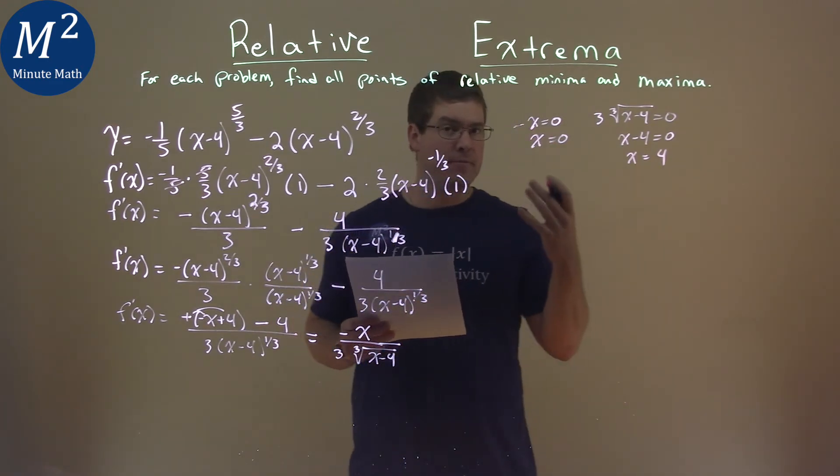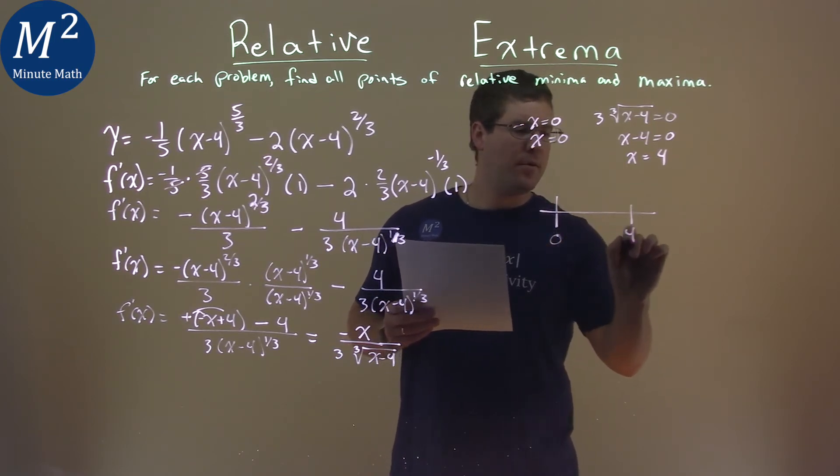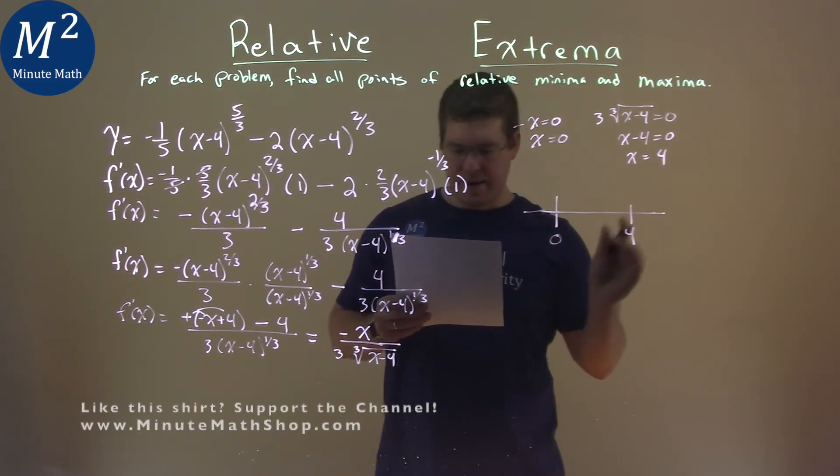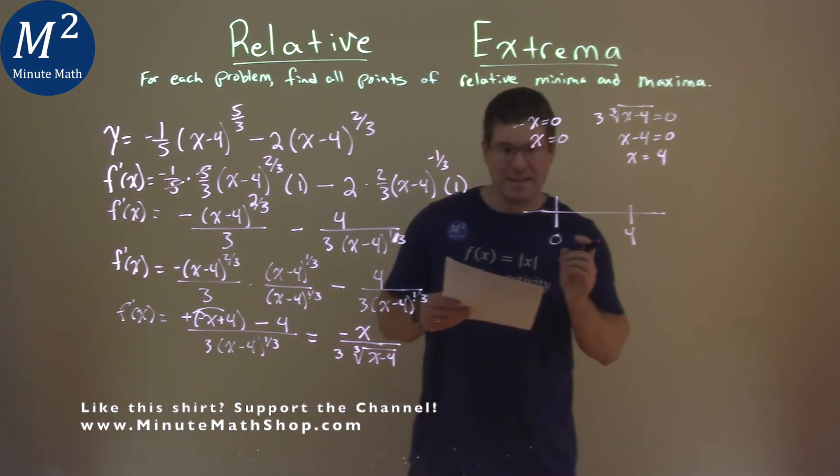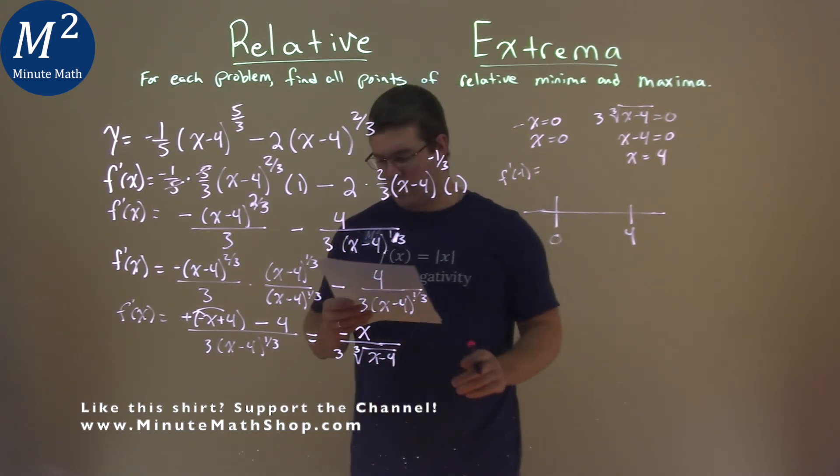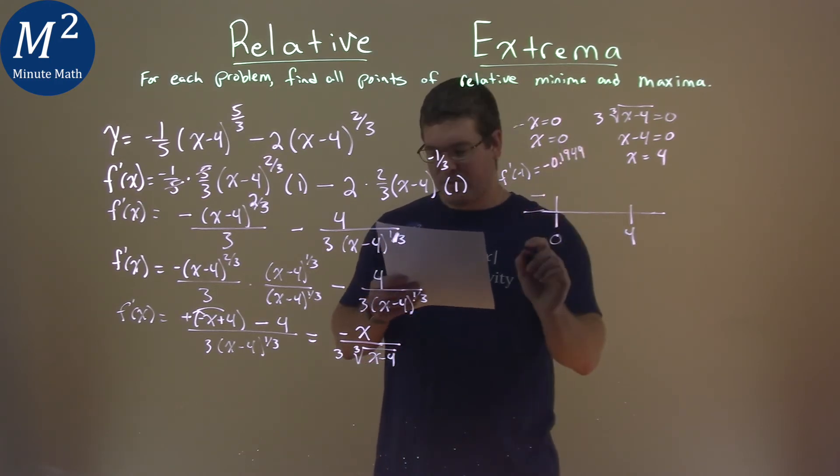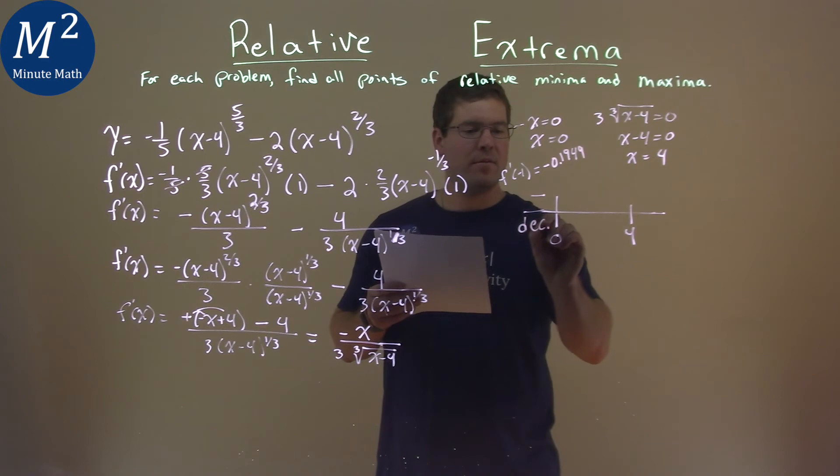So, we have our two critical values here. We need to use our first derivative test here. So, the values are at zero and four, and let's go apply it. I picked a value that was less than zero, negative one. So, I find f prime of negative one. We're plugging this into our derivative that we found, and I got negative 0.1949. I just care that it's negative, and so we are decreasing there.